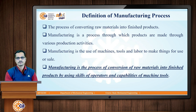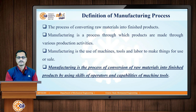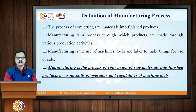Manufacturing is also a process through which products are made through various production activities — we use a number of techniques or activities or processes in order to process the input and get the desired output. Manufacturing is also the use of machines, tools, and labor to make things for use or sale. This definition introduces another important aspect of manufacturing: the use of machine tools and workers.